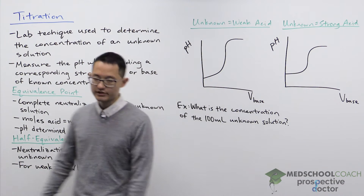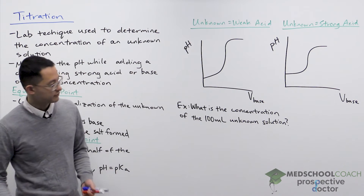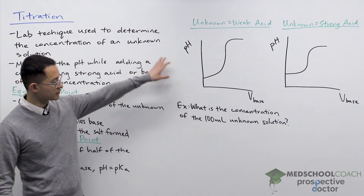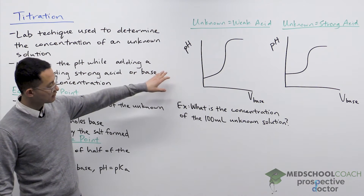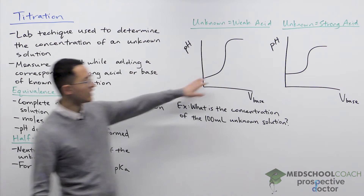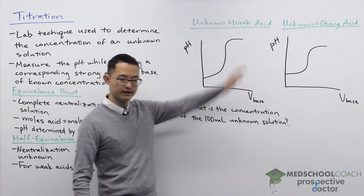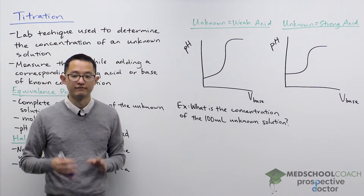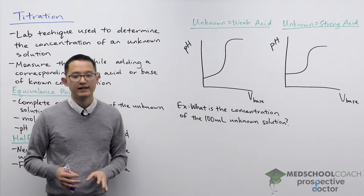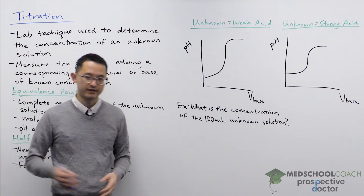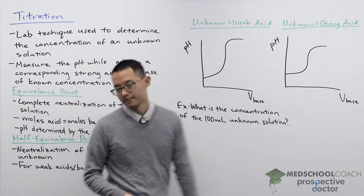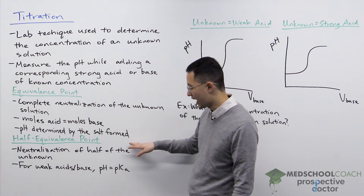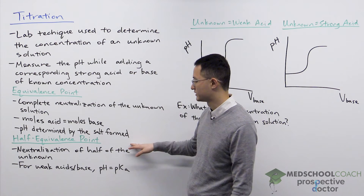As you perform a titration you're going to measure the pH and generally you're going to see a curve. When you're looking at the curve there are a couple of points of interest that the MCAT likes to test. These are the equivalence points as well as the half equivalence points.